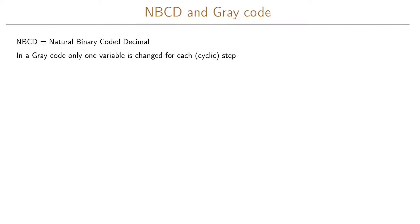We will look at the difference between NBCD coding and gray coding. NBCD is short for natural binary coded decimal, which is what we have implicitly used so far when coding our integers. In gray coding, only one variable is changed for each step when we go forward, and this is also true when we go cyclically back from the last step to the first.